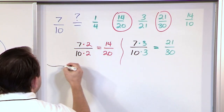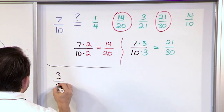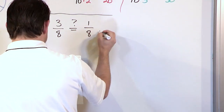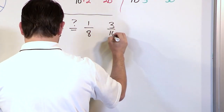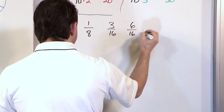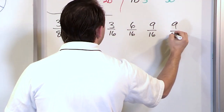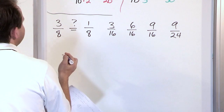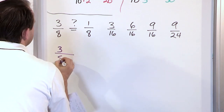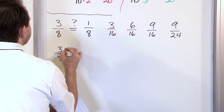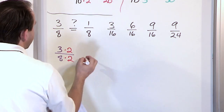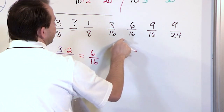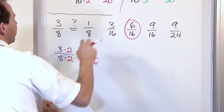Let's move on and do another problem. Let's say we have the fraction 3 eighths, and I want to figure out what is equivalent to that. The choices are 1 eighth, 3 sixteenths, 6 sixteenths, 9 sixteenths, and 9 twenty-fourths. Let's start by trying to multiply by 2 to see if we can change this fraction. We multiply by 2 on the top, so we have to also do it on the bottom — that's the rule. 3 times 2 is 6, and 8 times 2 is 16. So I look and see — I have 6 over 16 right there.